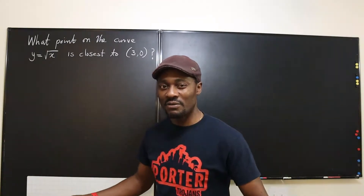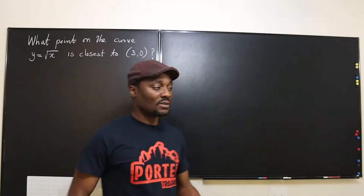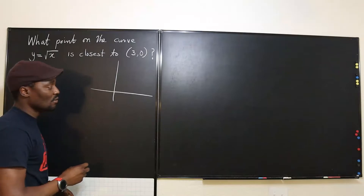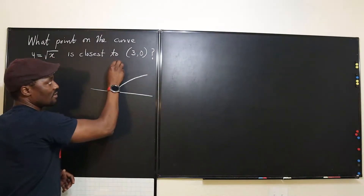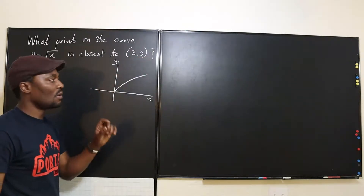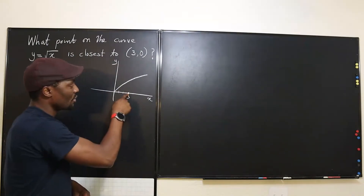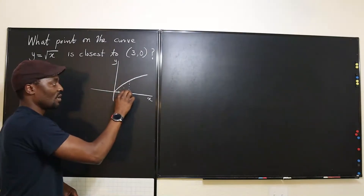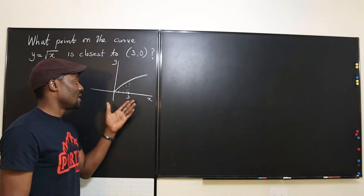Let's make a sketch to give you an idea — you don't strictly need it, but it helps as a visual. We have the graph of y = √x, and we want to know what point on this curve is closest to the point (3, 0). Some might say it's this point, or this point, or even the origin — we don't know which point is closest just by looking.